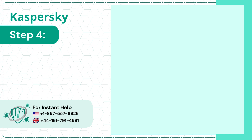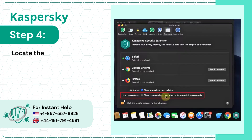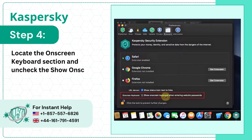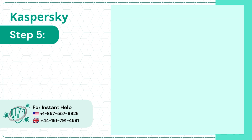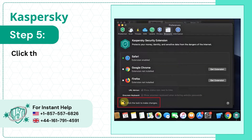Step 4: Locate the Onscreen Keyboard section and uncheck the Show Onscreen Keyboard when Entering Website Passwords box. Step 5: Click the Lock icon on the bottom to make the changes.